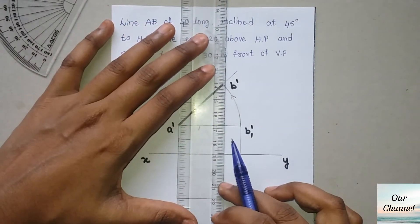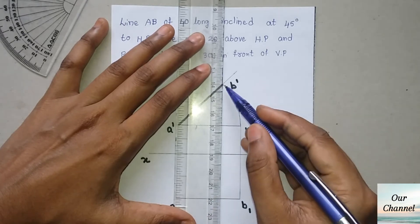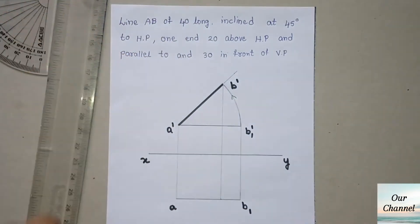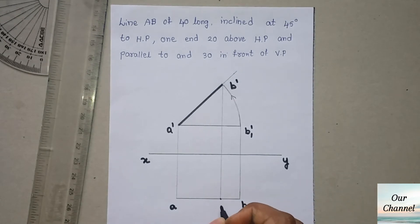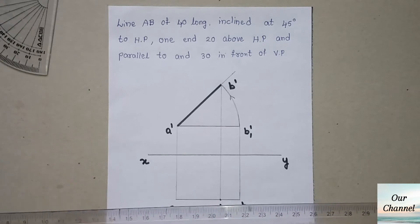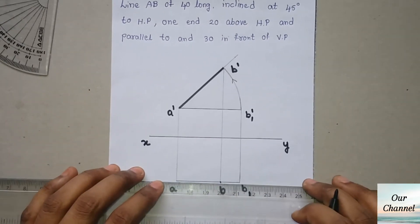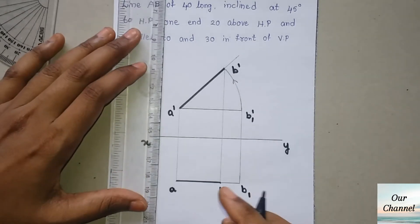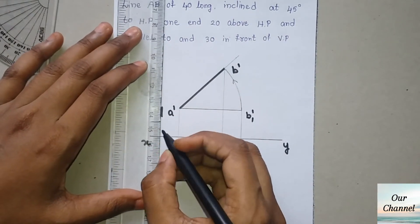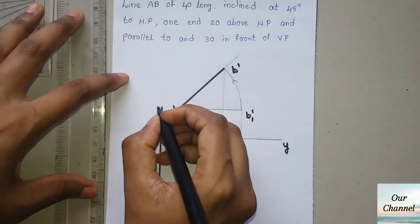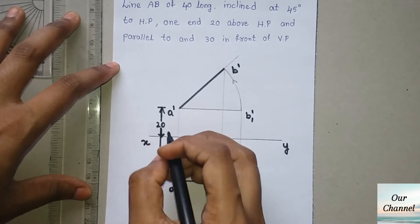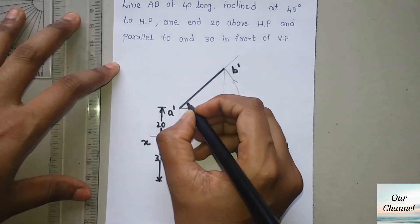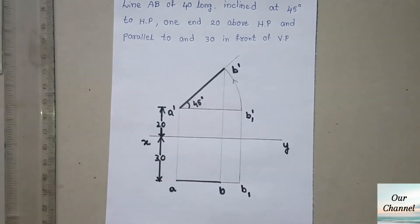Now draw a perpendicular line from b dash which should touch the line a to b1 at point b. Label it b — so a to b is the true length of the line and this is the top view. Write the measurements. This is the final drawing of a line inclined to HP and parallel to VP.